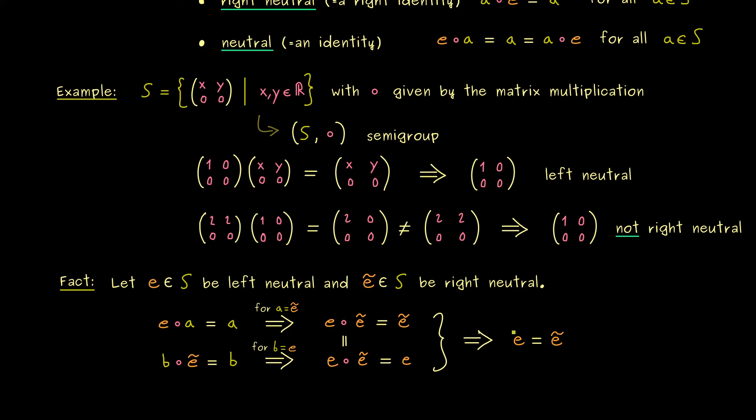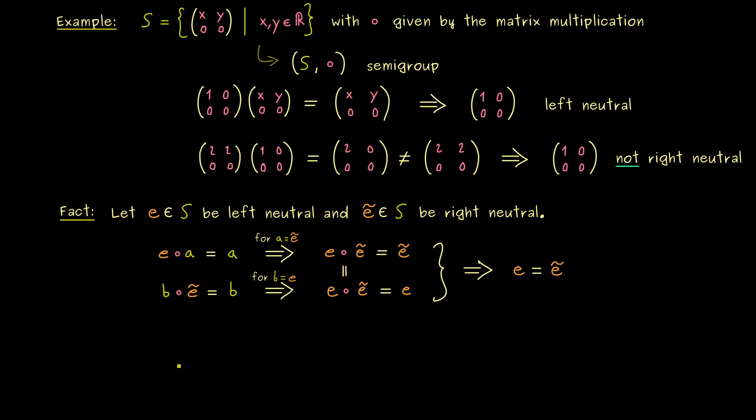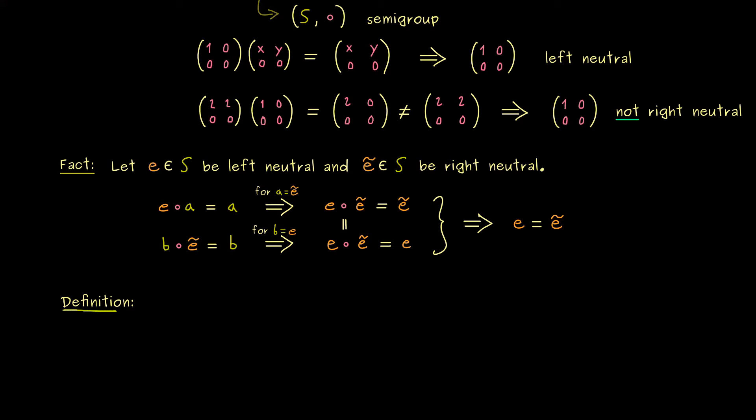With that important fact in mind we can go and define so-called inverses. Indeed inverses only make sense with respect to the given neutral element. So the assumption here is that we take a semi-group with an identity and we call it E. And if we assume that we also know this is the neutral element, there can be no other.